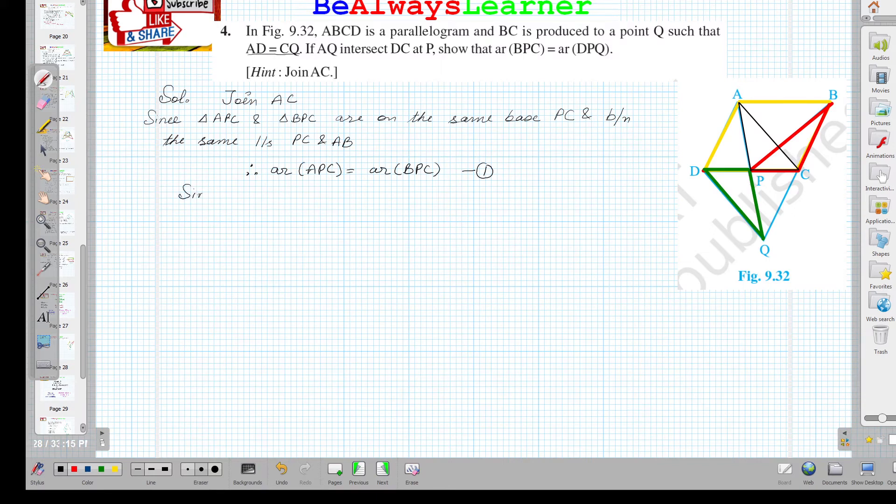Since we know that AD is equal to CQ, the AD yellow line is equal to CQ, and it is also given that AD is parallel with CQ.